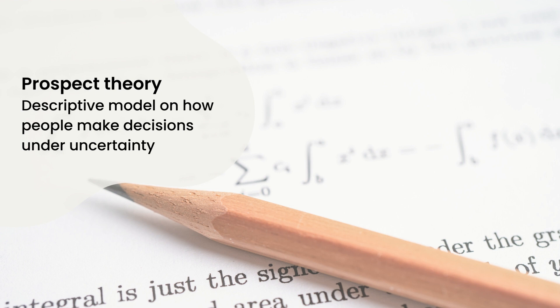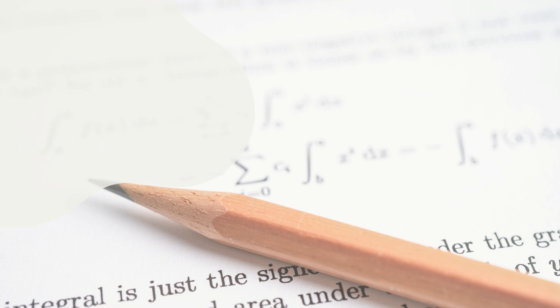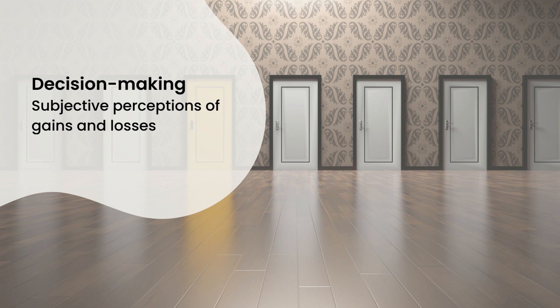This theory, developed by psychologists Daniel Kahneman and Amos Tversky, is a descriptive model of how people make decisions under conditions of uncertainty. It is based on the idea that people do not make decisions based solely on the expected value of a particular outcome, but rather on their subjective perceptions of the potential gains and losses associated with that outcome.